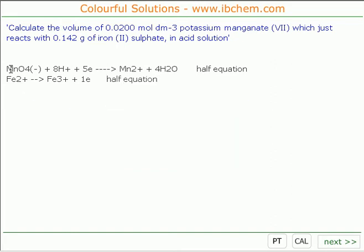Now, when manganate VII reacts with iron 2+, we have to have exactly the same number of electrons. But this means multiplying the second equation by 5. I'm going to put in 5 here, 5 here and 5 here, so that we don't have to write it out again. Okay, what we're going to do is add these together now.